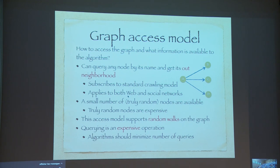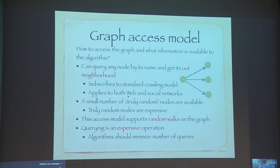This is a very natural assumption enabled by crawling. If you write a standard crawler that goes around crawling webpages, you have this assumption. It's true for both web and social networks. Things like PageRank are built on this assumption — you're able to go to a webpage and get all its out-neighbors. The second assumption is that a very small number of truly uniform nodes are available to the algorithm. Truly uniform nodes are really expensive — how do I get a truly uniform Facebook user or a truly uniform webpage? That's tricky, especially since the graph is changing. And another reason we like this graph access model is that it supports random walks — once I get a node and all its out-neighbors, I can pick one uniformly and continue my random walk.